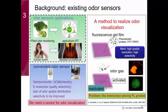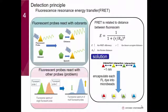Our lab has developed a fluorescent film sensor. Because the fluorescent probes are nanometer-scale in size, these film sensors have high spatial resolution. From these two fluorescent pictures, we can identify a hand-shaped odor source and a leaf-shaped odor source. But these film sensors also have a problem: the interaction between fluorescent probes. To solve this problem, let me explain why this interaction happens.